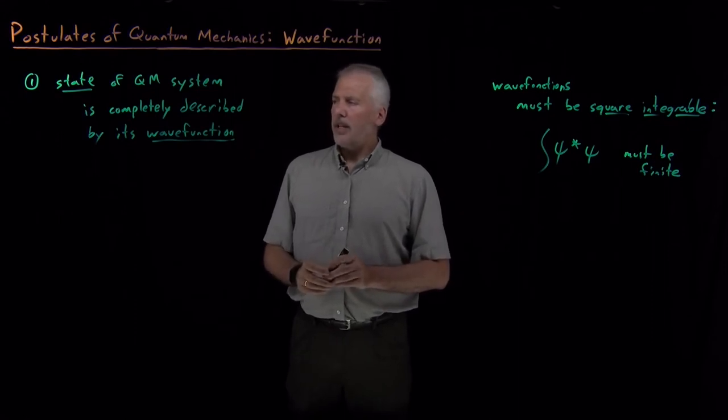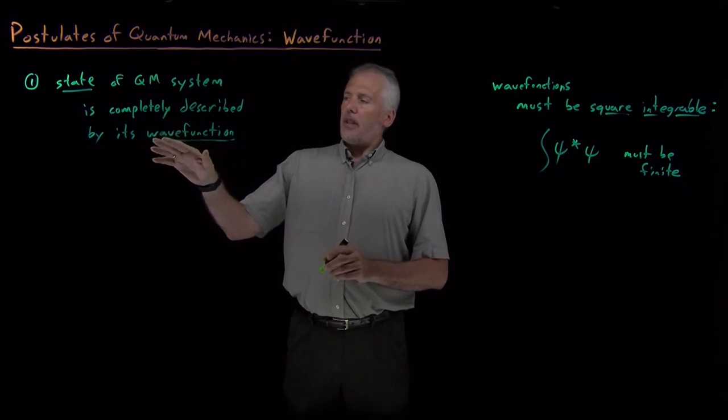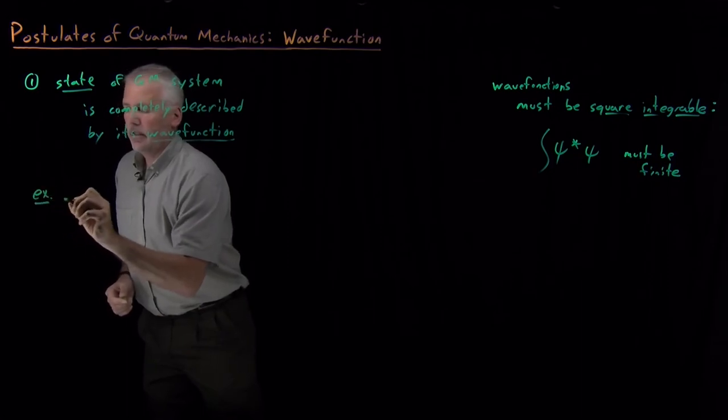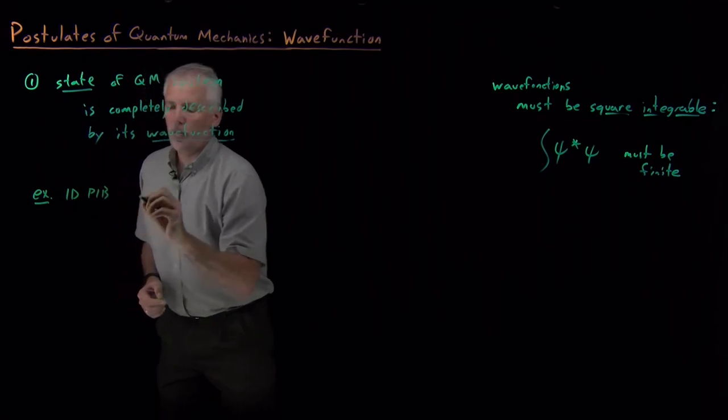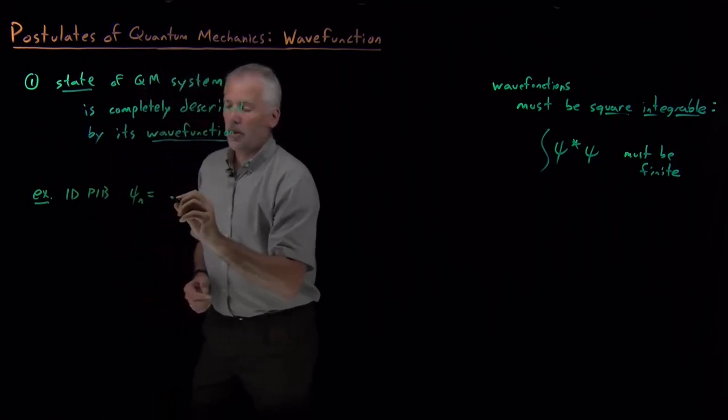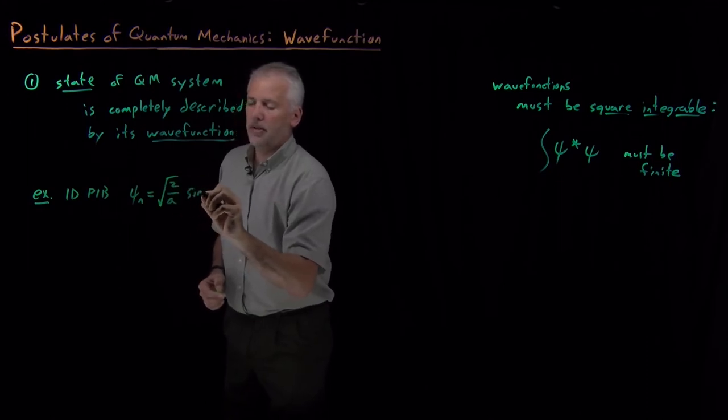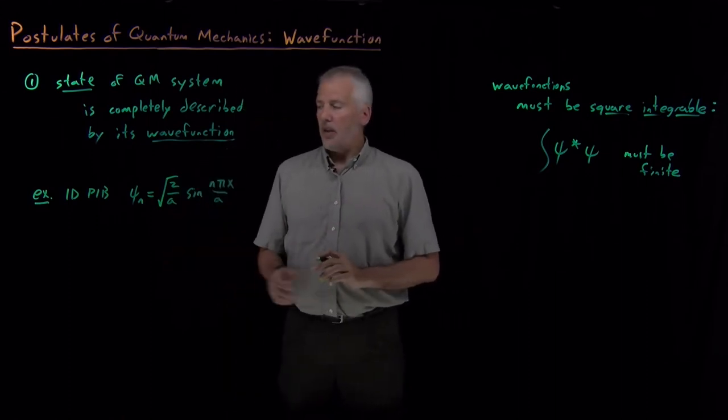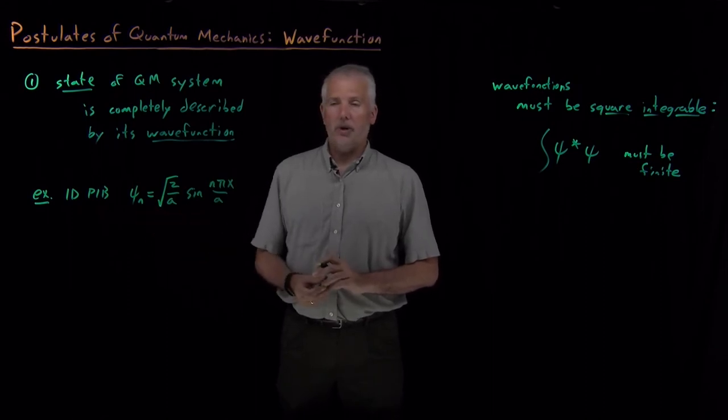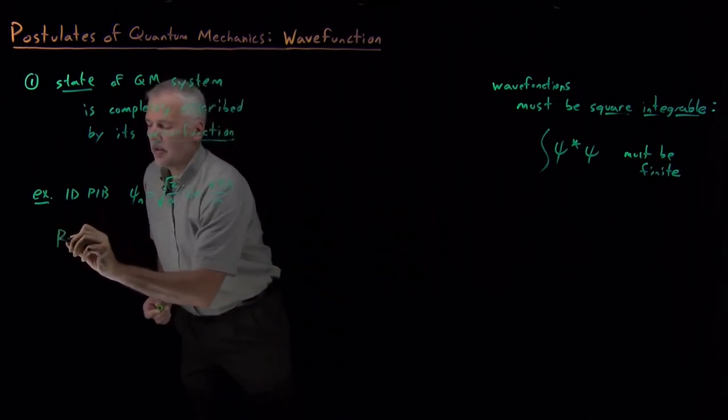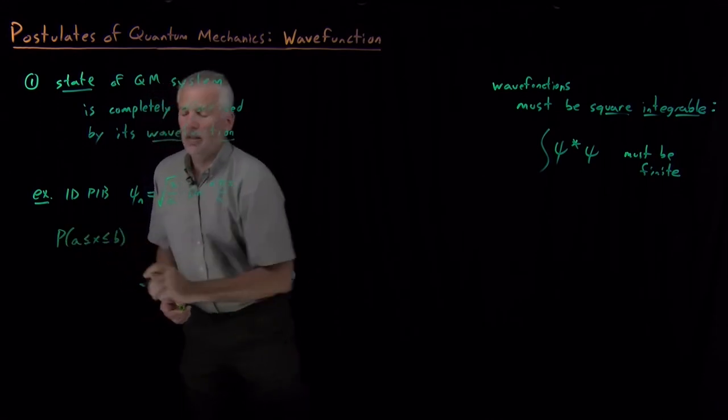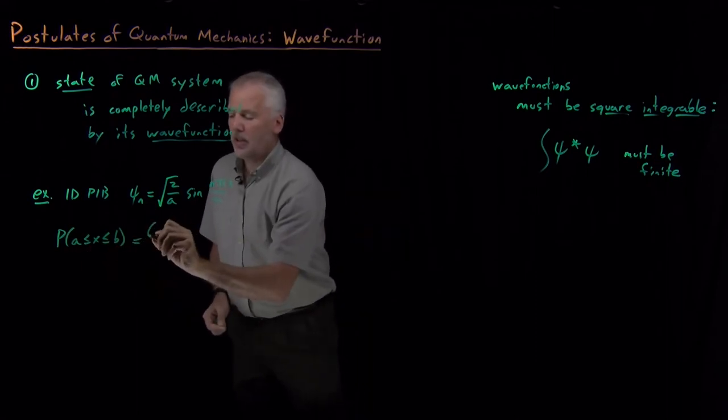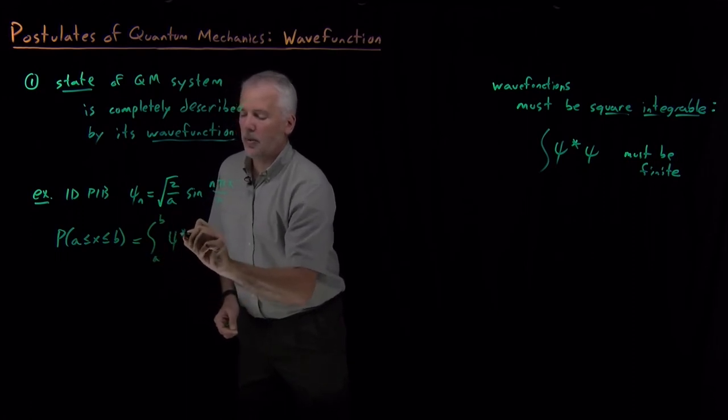What do I mean when I say I can extract properties from the wave function? We've seen one example so far. The wave functions for the one-dimensional particle in a box are sine of nπx over a with a normalization constant. The one property we know how to ask about for this wave function is probability. Remember, the probability of finding a particle between two limits a and b is just the integral from a to b of the squared wave function.